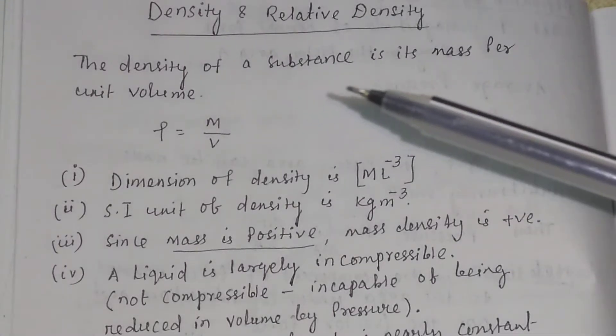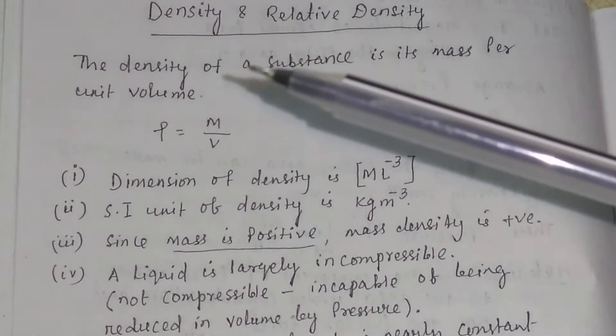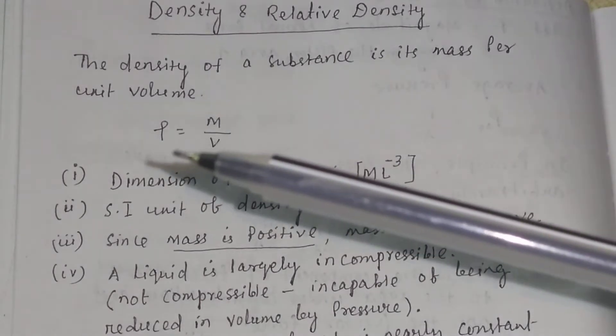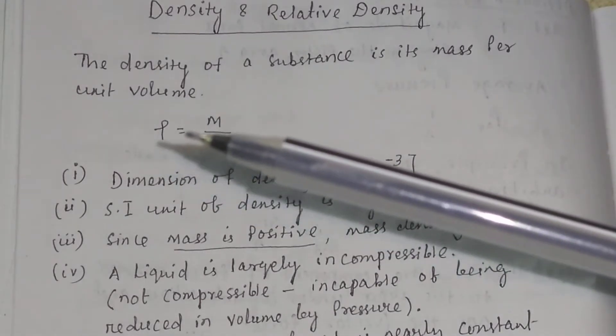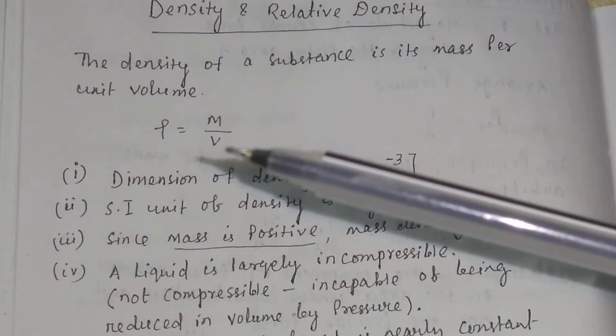Density. The density of a substance is its mass per unit volume. It is denoted by the symbol rho. So rho is equal to mass divided by volume.